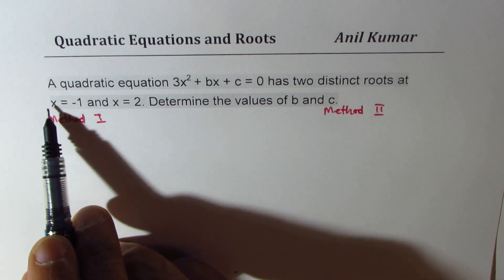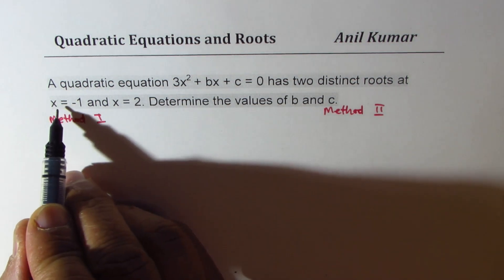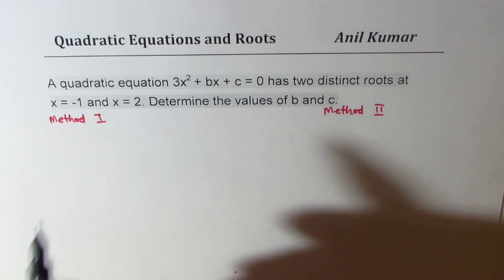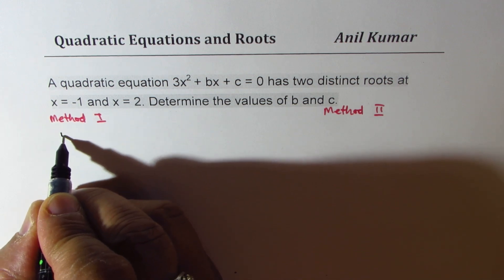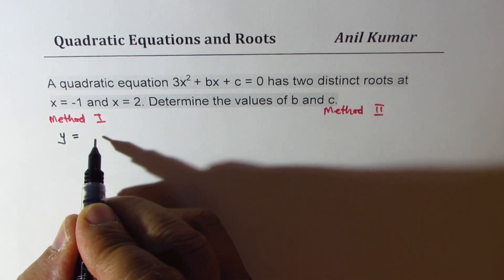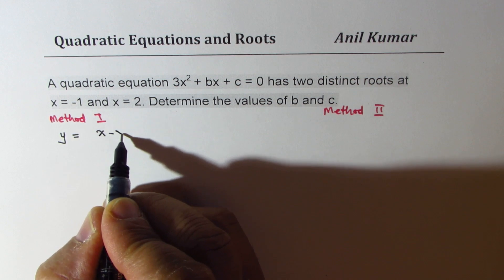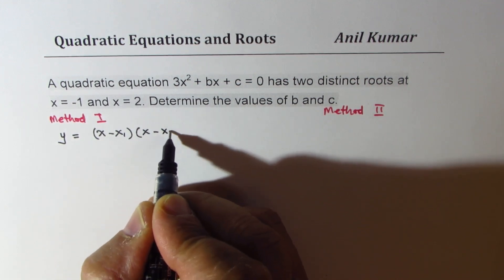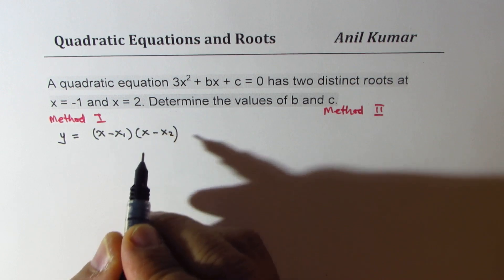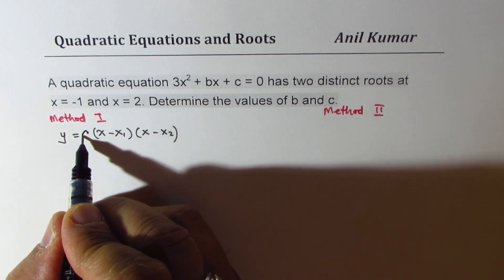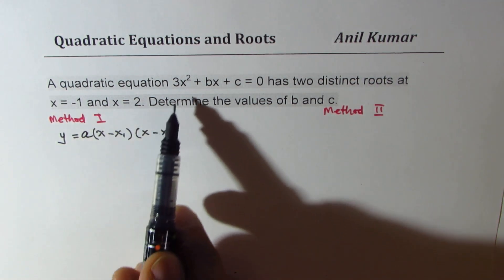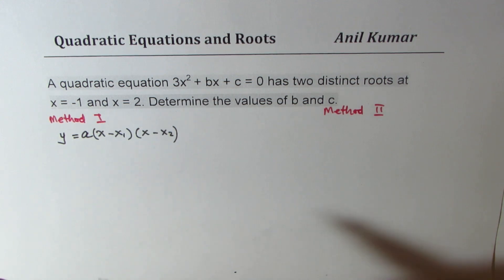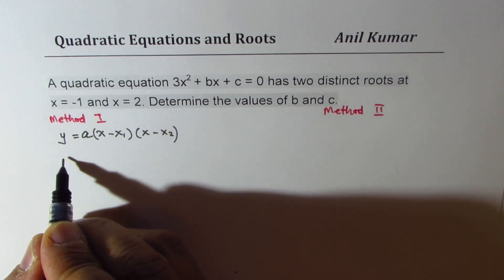Now, first method is, we are given roots are x1 is minus 1 and x equals 2. We could always write quadratic equation as x minus x1 times x minus x2, where x1 and x2 are the roots, times a. Now, this a is given to us as 3 in this particular equation.